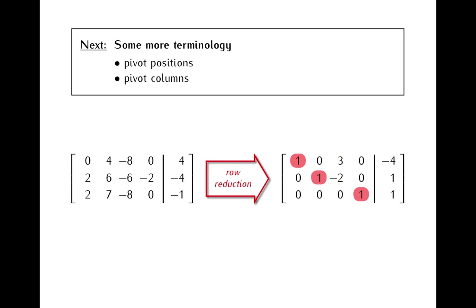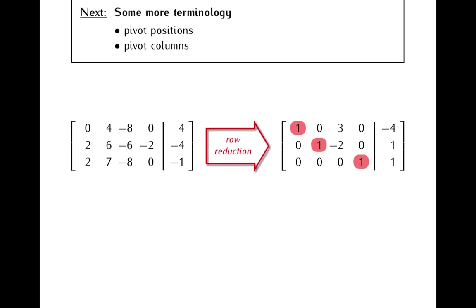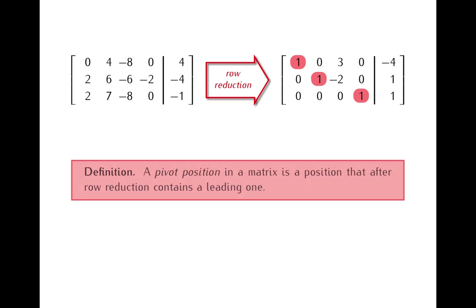The problem is that if we would like to state these facts precisely, they would sound quite awkward. We would have to say, for example, that a system of equations is consistent if its augmented matrix after a row reduction has no leading one in the last column. So to simplify this, we have the following definition.